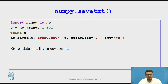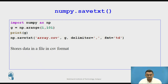savetxt saves or stores data in a file in CSV format. Here we take an array ranging from 1 through 100, print it, and save the data in CSV format. The delimiter is a comma since CSV values are separated by commas, and the data is stored in array g. We pass array g with format %d for integer, and this command stores the data in the file array.csv in CSV format.